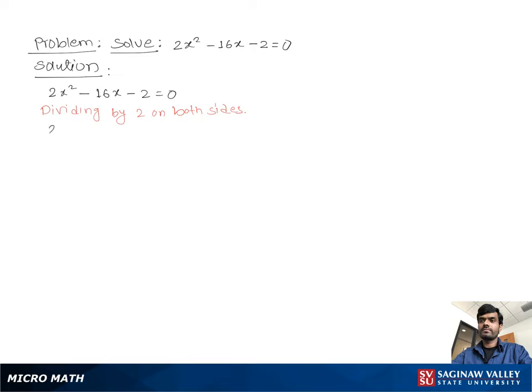Dividing by 2 on both sides to make the coefficient of x² equal to 1. So you can write 2x²/2 - 16x/2 - 2/2 = 0/2. Then 2s cancel out, we get x² - 8x - 1 = 0.